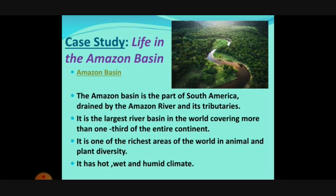Now there is a case study about the life of the Amazon Basin — about a group of people, the tribals who live there. The Amazon Basin is the part of South America drained by the Amazon River and its tributaries. It is the largest river basin in the world, covering more than one third of the entire continent. It is one of the richest areas in animal and plant diversity. It has a hot, wet, and humid climate because it is in the equatorial region.